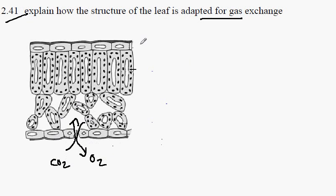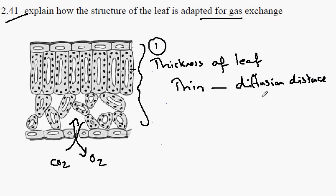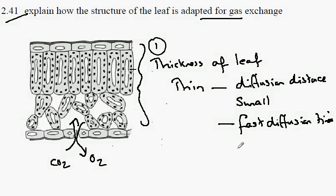The major adaptations are the thickness of the leaf. Now the leaf is so thin, let's make this number one, the leaf is so thin that the diffusion distance for either oxygen or carbon dioxide is very small. And with small diffusion distances we get fast diffusion times, or you might say you have a high rate of diffusion.